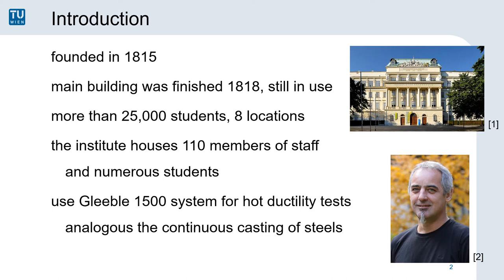Some quick words on the University as well as our Institute. TU Wien was founded in 1815 and the main building finished in 1818. Today there are more than 25,000 students enrolled. Our Institute houses around 110 staff members and is currently headed by Professor Korseschnik.